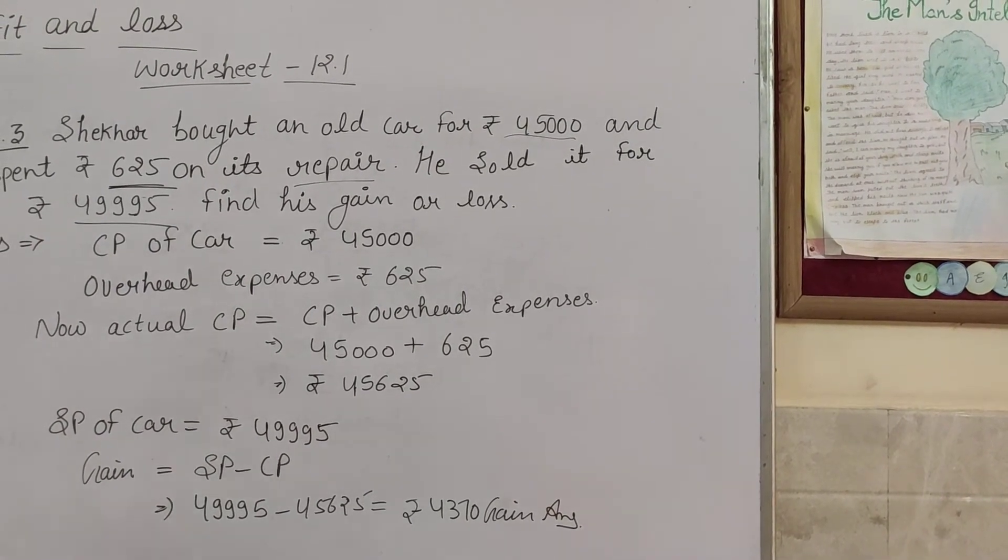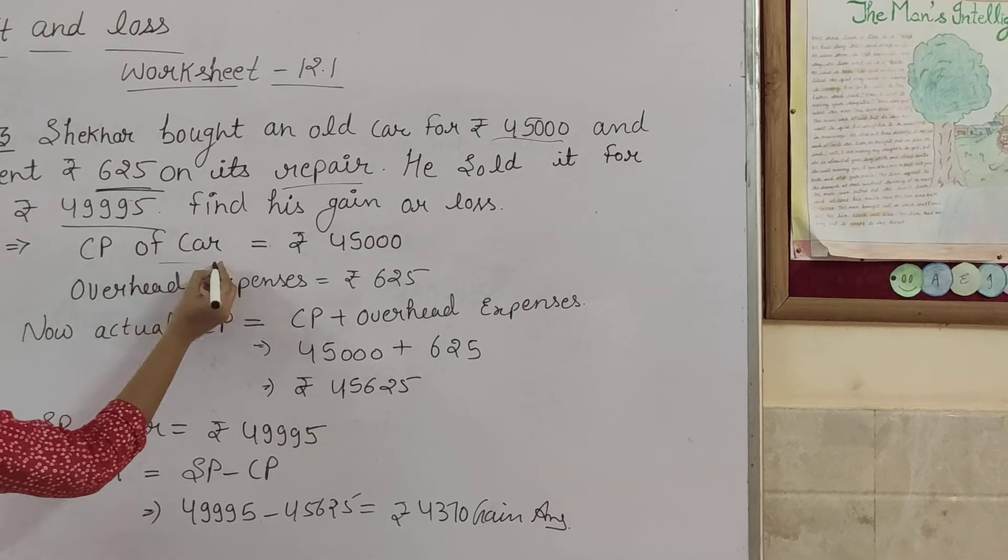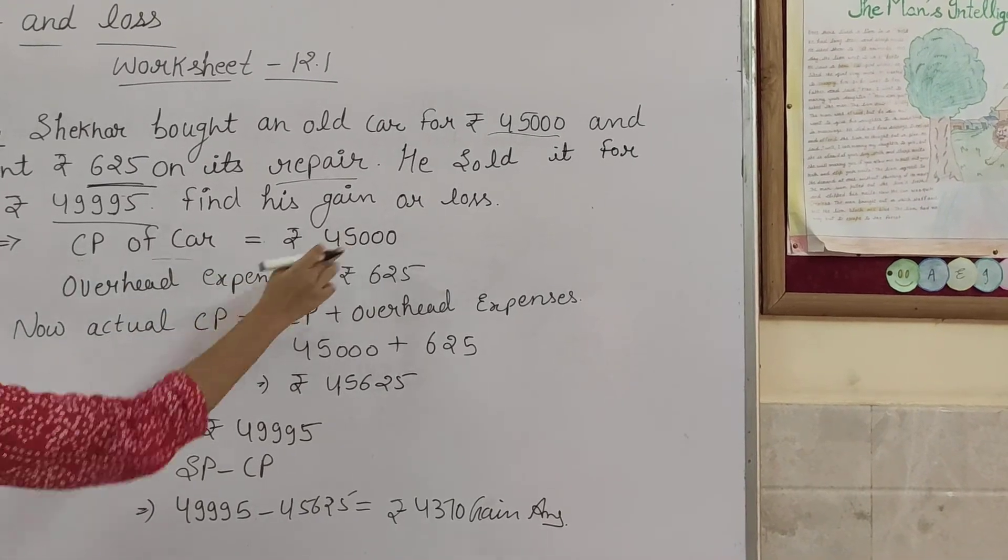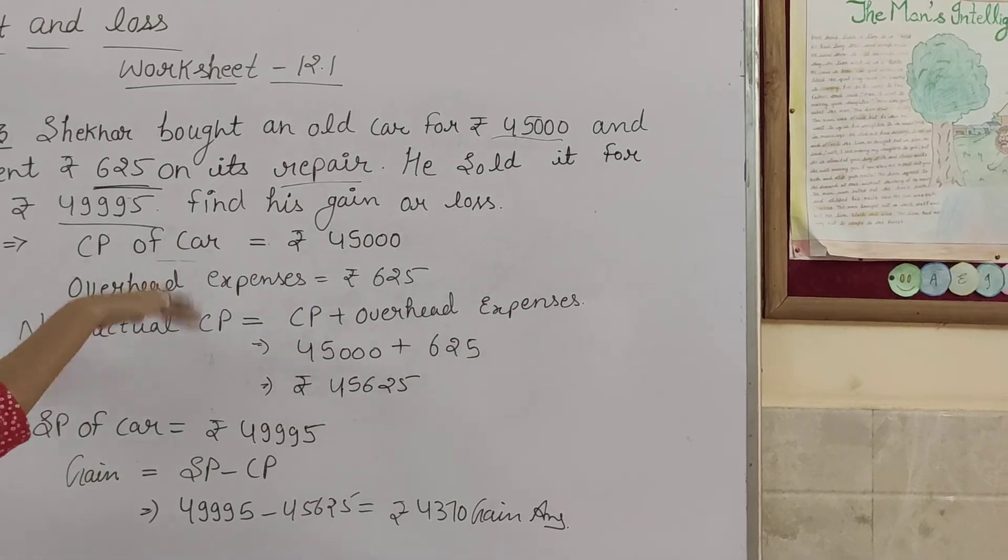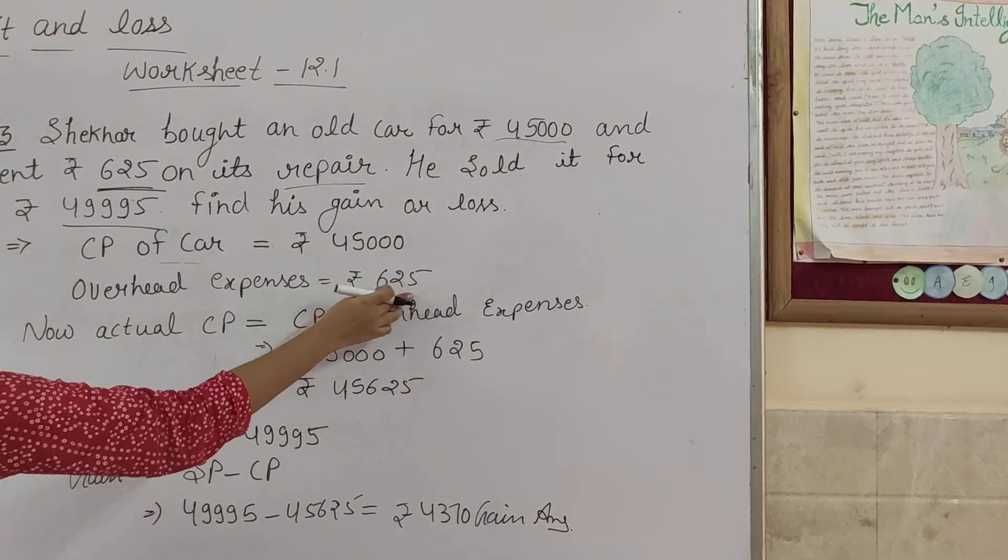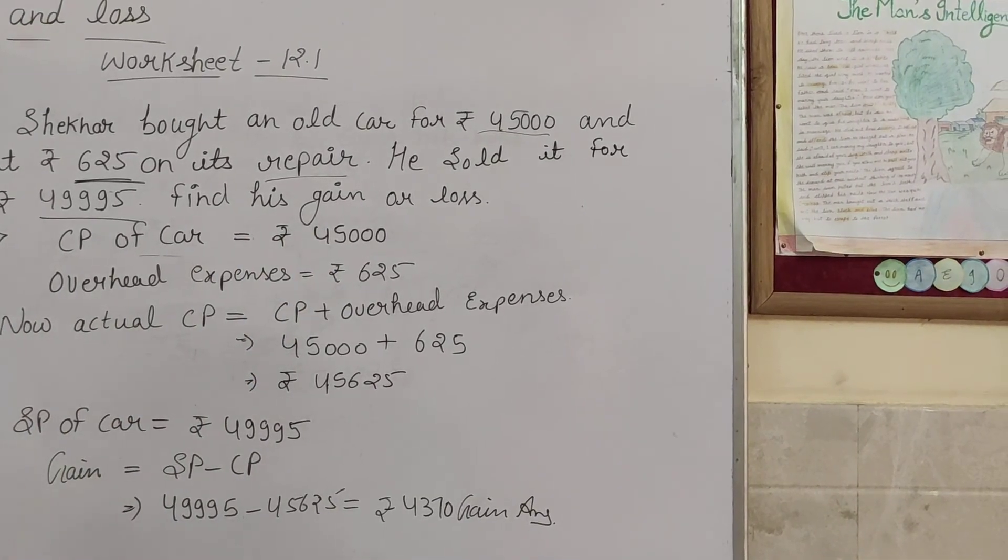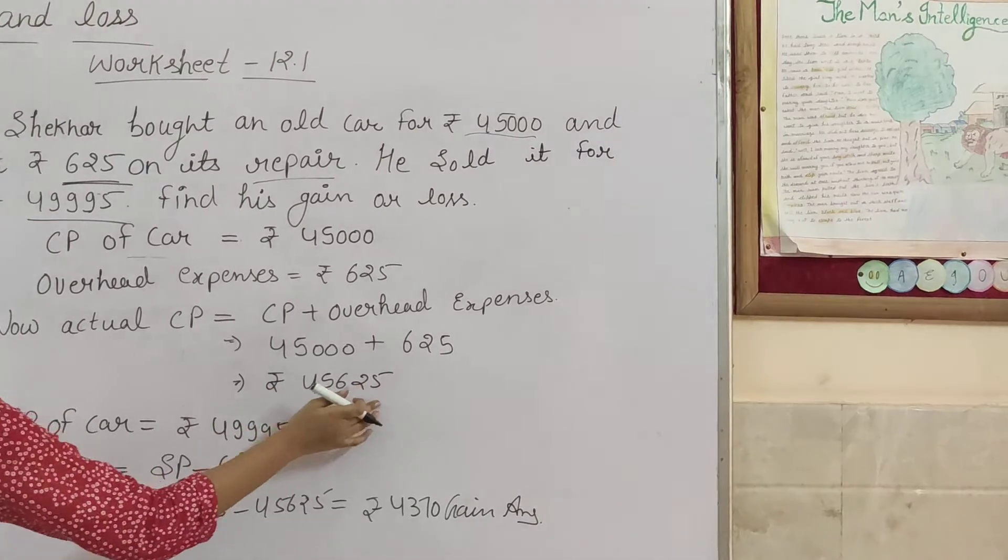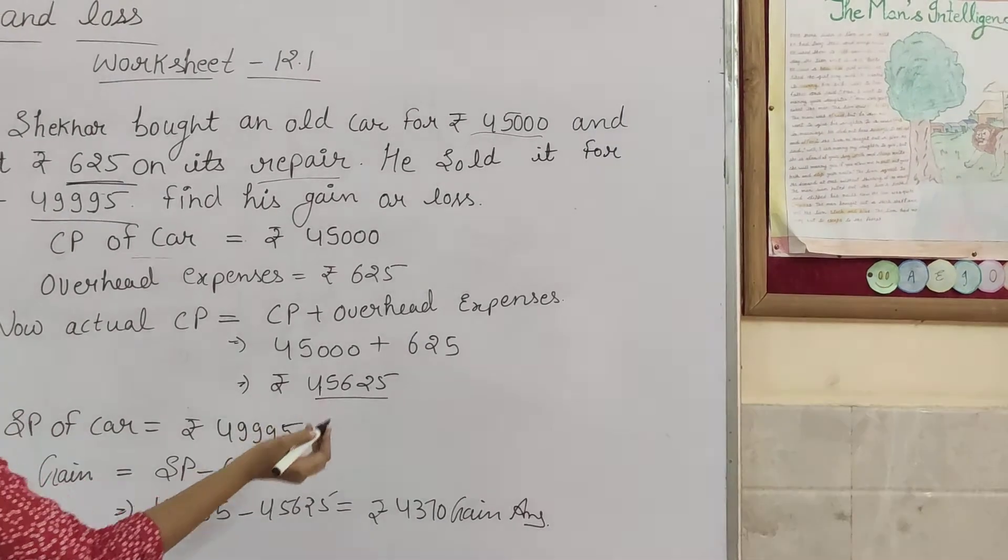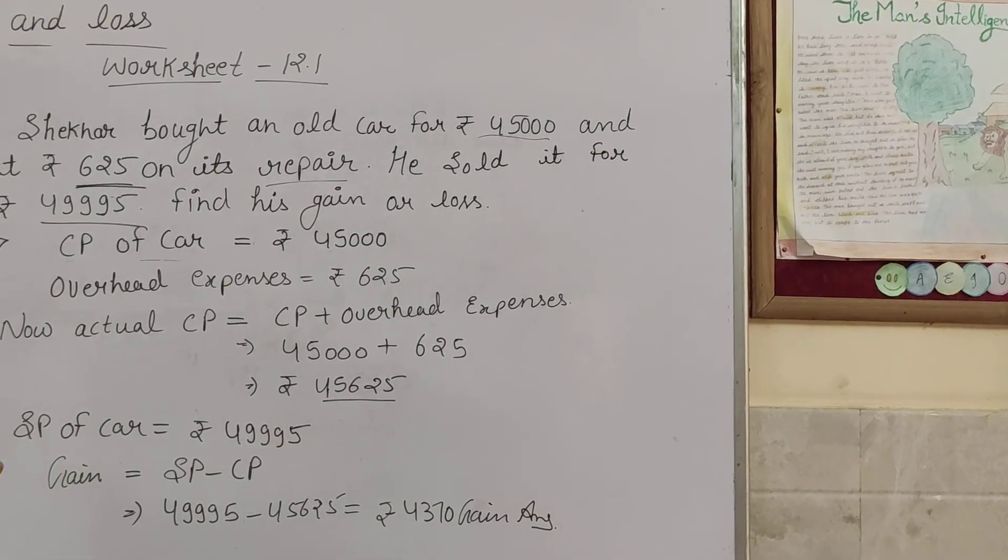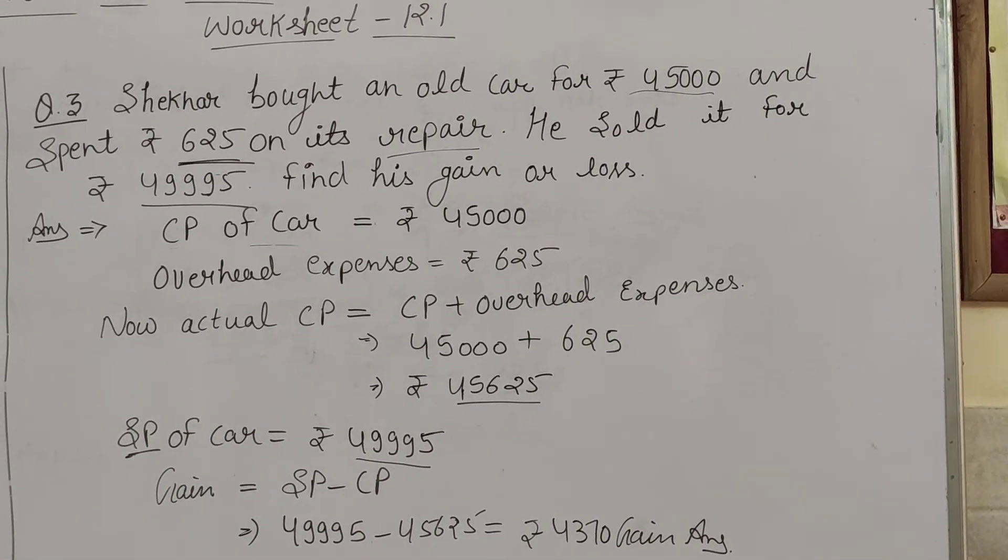After that, he sold it for ₹49,995. Now we need to find whether he had profit or loss. First, what is the CP? The CP of the car is ₹45,000. What are the overhead expenses? After buying it, he spent ₹625. So the actual CP is ₹45,000 plus ₹625, which equals ₹45,625.